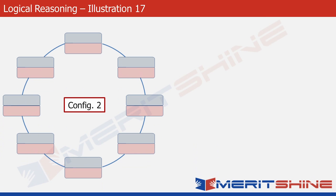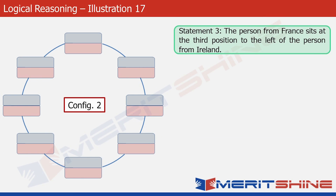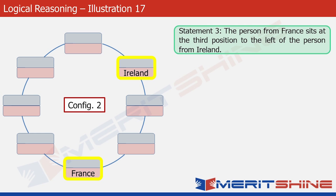Starting fresh with Configuration 2, we look at statement 3: the person from France sits at the third position to the left of the person from Ireland. We pick any two boxes with a gap of two positions between them. Think of this as a completely new, separate setup — forget Configuration 1 for the moment. So we place France and Ireland in their respective positions, confirming France is third to the left of Ireland.